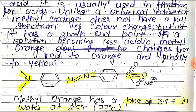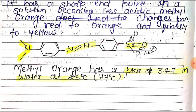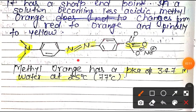The structure of Methyl Orange is given below. This is the structure of Methyl Orange with two phenyl rings. Thank you.